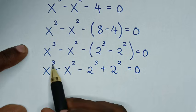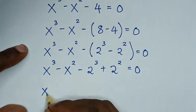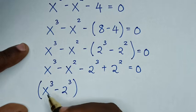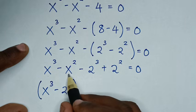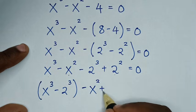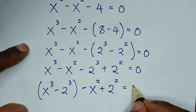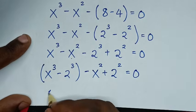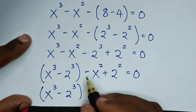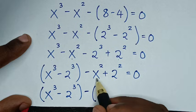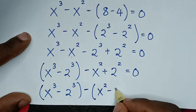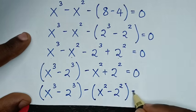We group terms with like powers of 3 together and like powers of 2 together: open bracket x cubed minus 2 cubed close bracket, minus open bracket x squared minus 2 squared close bracket, equals 0. Then we factor out negative from the second bracket: x cubed minus 2 cubed, minus open bracket x squared minus 2 squared close bracket, equals 0.